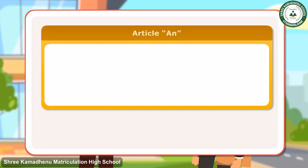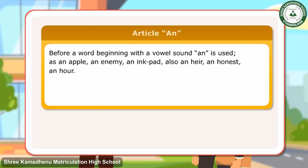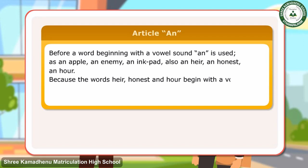Article AN — before a word beginning with a vowel sound, AN is used: an apple, an enemy, an ink pad, also an air, an honest, an hour — because the words air, honest, and hour begin with a vowel sound, as the initial consonant H is not pronounced.